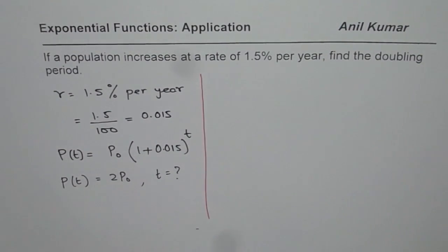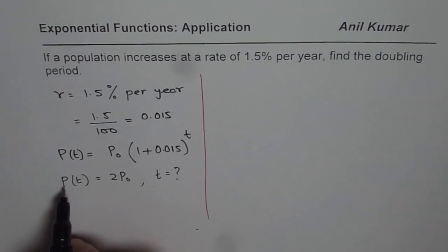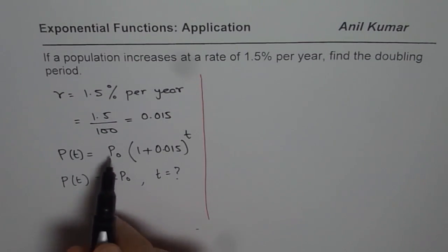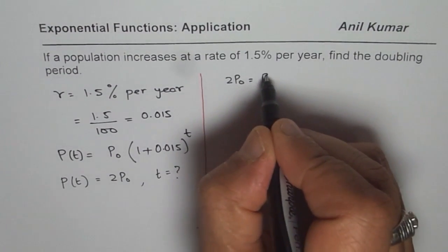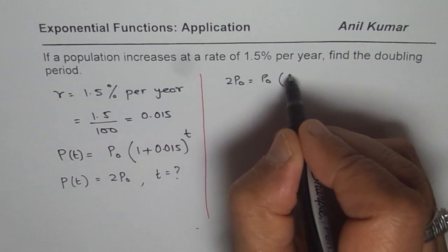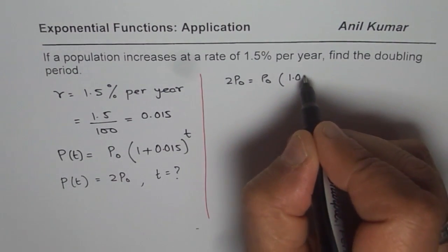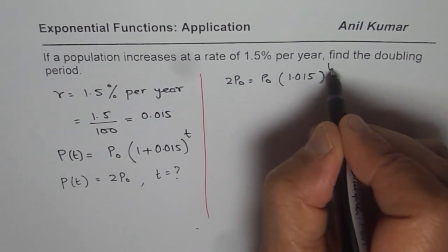Now let us try to substitute the values and figure it out. So we know that P(t) should be 2 times P₀. So let me rewrite this equation as 2 times P₀ equals to P₀ times 1.015 to the power of t.